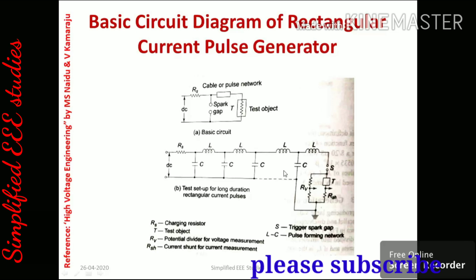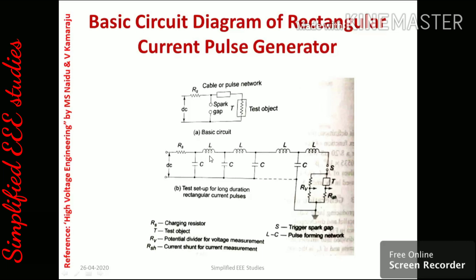Here is the equivalent circuit and the elaborated diagram of the rectangular current pulse generator. The DC supply input feeds through RS, the charging resistor. The LC sections form the pulse forming network, which plays a crucial role in generating rectangular current pulses. RV is a potential divider to measure voltage, and RSH is used to measure current. The lightning arrester is placed here as the test object.